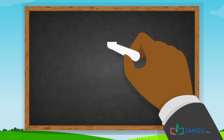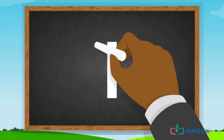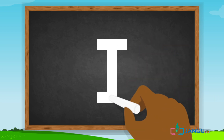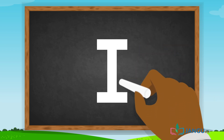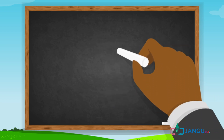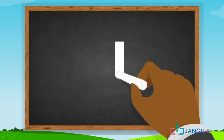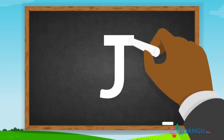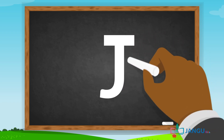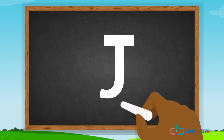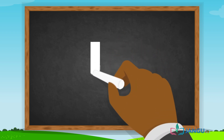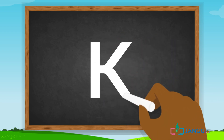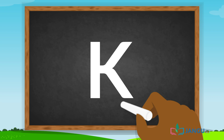I has a long straight line with a short straight line on its top and bottom. J is a curved line with a short straight line on top of it. K is a long straight line with two short slanting lines joining at the middle.